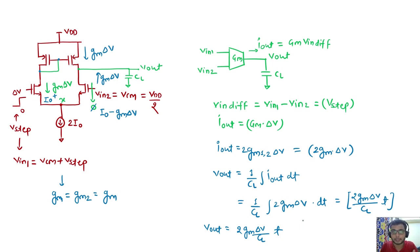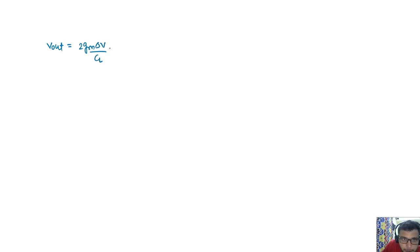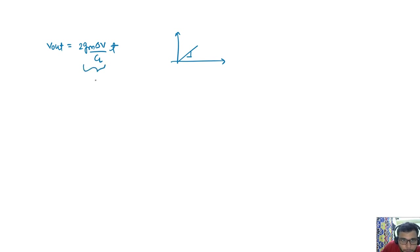So slew rate is about: when you apply a step input, how fast the output can change. From this expression we can see dV_out/dt = 2·GM·ΔV / CL. This particular slope defines the rate of change of the output. So this slope — 2·GM·ΔV / CL — is what characterizes how fast the output is varying.